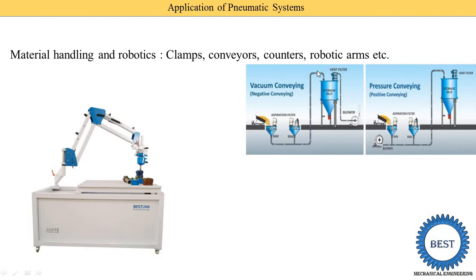Here we see vacuum conveying, where material is transferred using vacuum — materials are filled in and transferred to another place. Similarly, pressurized conveying uses pressure to move material. In the vacuum system, a blower is installed at the outlet portion, so vacuum is created throughout the full system.